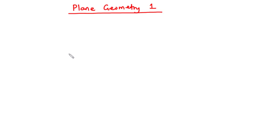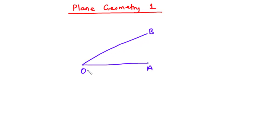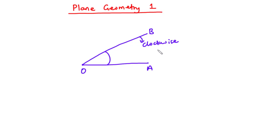Angles are formed when two straight lines meet. Assuming we have a straight line OA and another straight line OB, at the point of intersection an angle is formed. The size of the angle can be determined by rotating line OB about O in the clockwise direction to lie on line OA. Angles are measured with an instrument called a protractor.